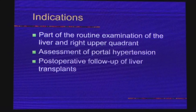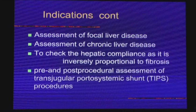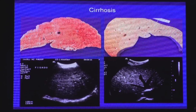Color Doppler is used for assessment of portal hypertension and chronic liver disease, assessment of focal liver lesions, and pre- and post-procedural assessment of TIPS and other procedures. Before heading to the color Doppler, we have to see the morphological pattern in the liver first — the texture: is it fine, coarse, or nodular? In chronic liver disease, the texture is coarse and becomes nodular. These changes are first taken into consideration, and then we switch on the color to see further details.